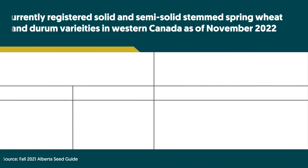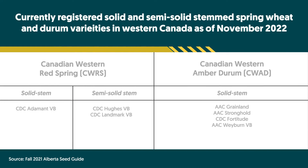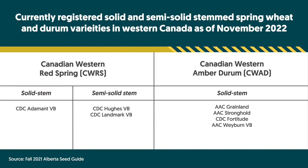The number one thing to do is variety selection — select a solid stem wheat. Solid stem wheats are available in amber durum, Canadian hard red spring wheat, and also in Canadian northern classes. The solidness inhibits the feeding of the larvae; the larvae don't survive and therefore you don't get the damage.